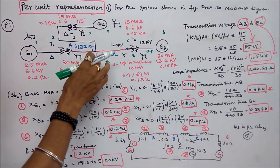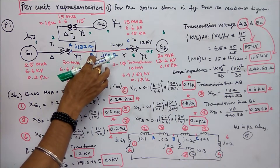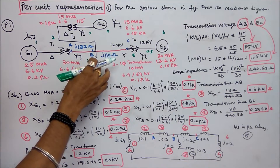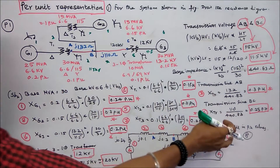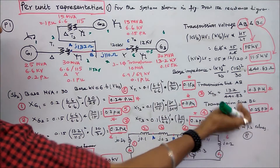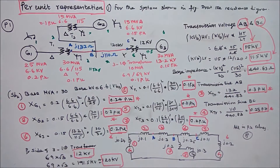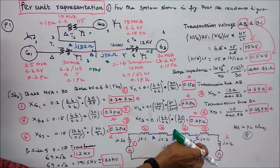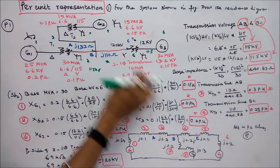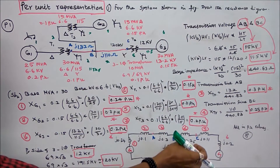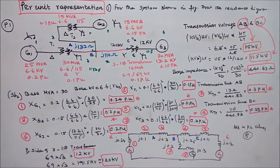For transmission line BC, the actual reactance is j110 ohms. Per unit = 110 / 440.83 = 0.25 per unit.